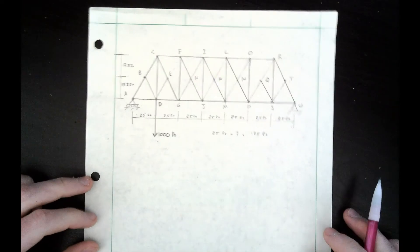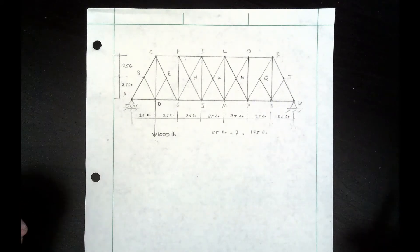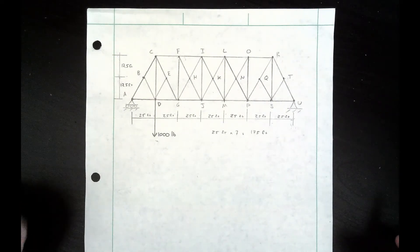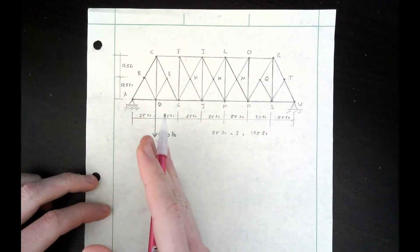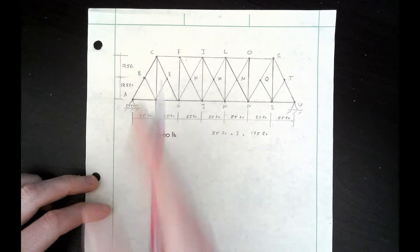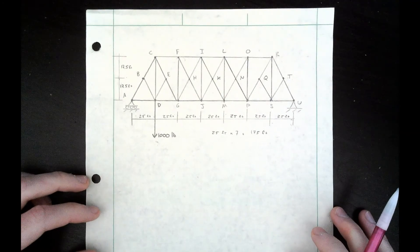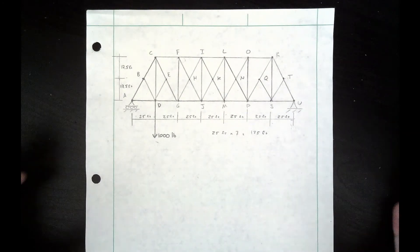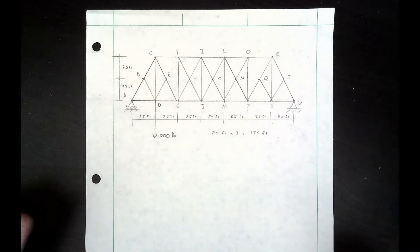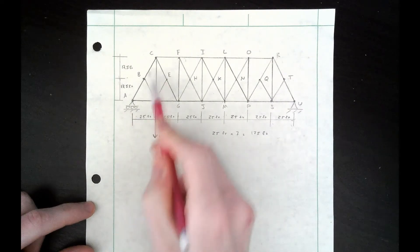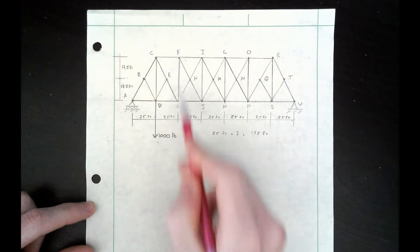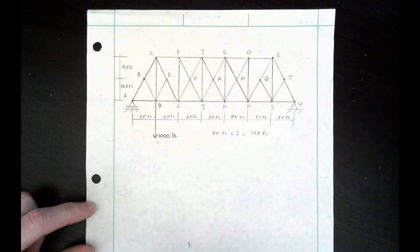For this problem, I would recommend using the method of sections like we learned in class. The method of sections allows you to cut a truss at any point as long as you're going through no more than three members, and then find the internal forces directly by analyzing that cut alone, as opposed to the method of joints where you have to find every single force at every single joint until you get to the one you want.